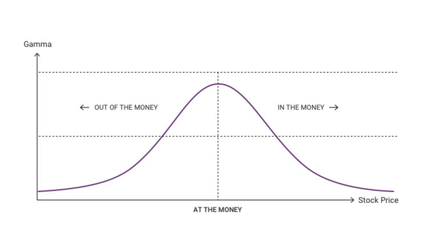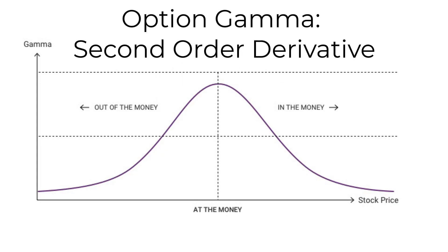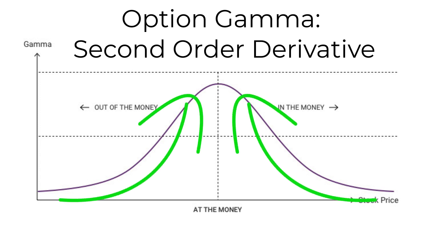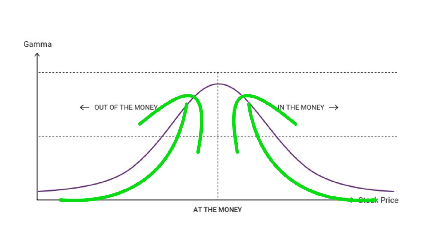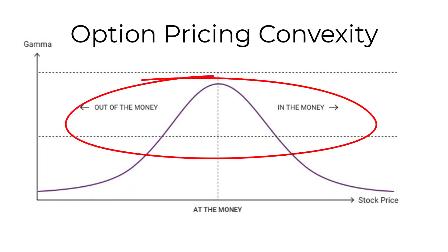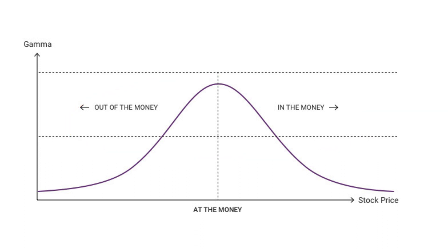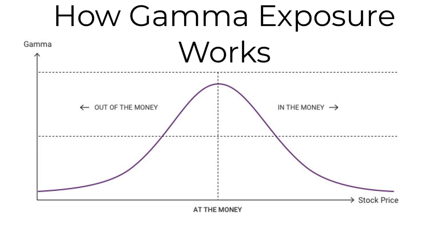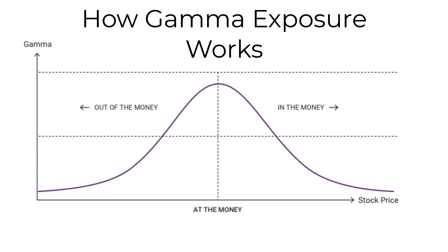Gamma is a second-order derivative that basically measures the acceleration of option pricing. Option prices don't move in a straight line — there is a convexity to the movement of option prices, and we've talked about this a number of times in our other videos. If you want a brief introduction into how Gamma exposure works, check out that video if you get a chance.